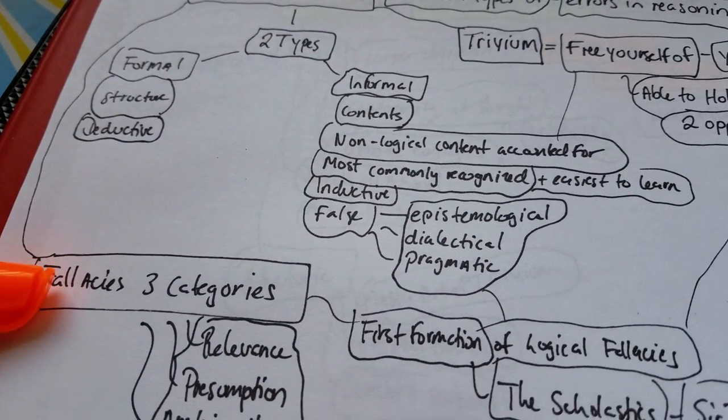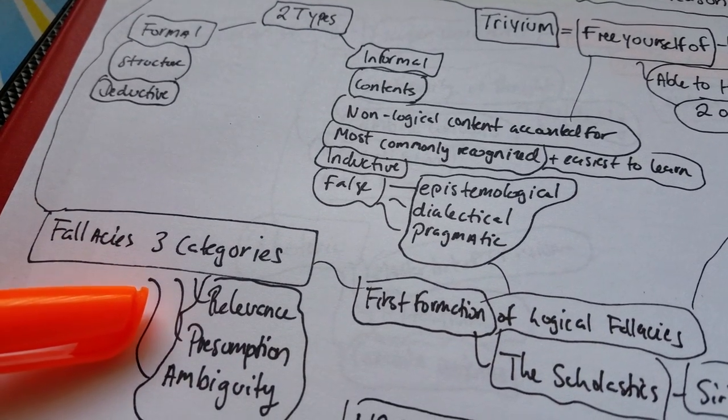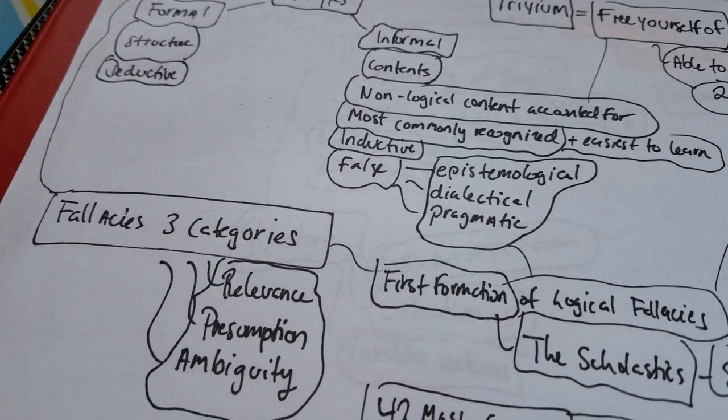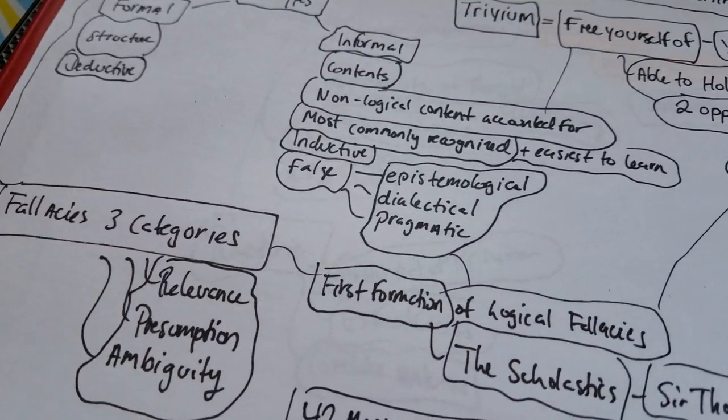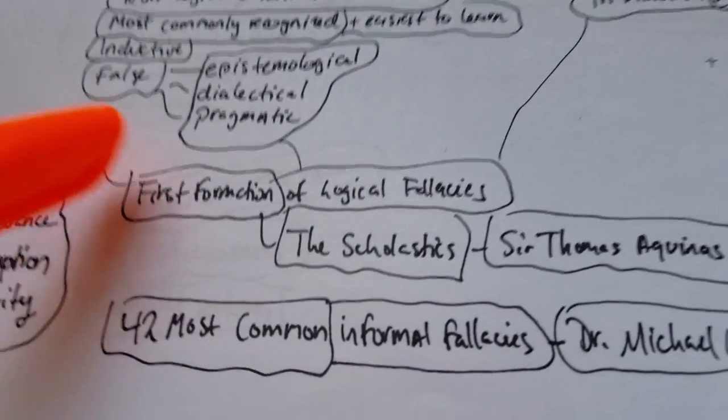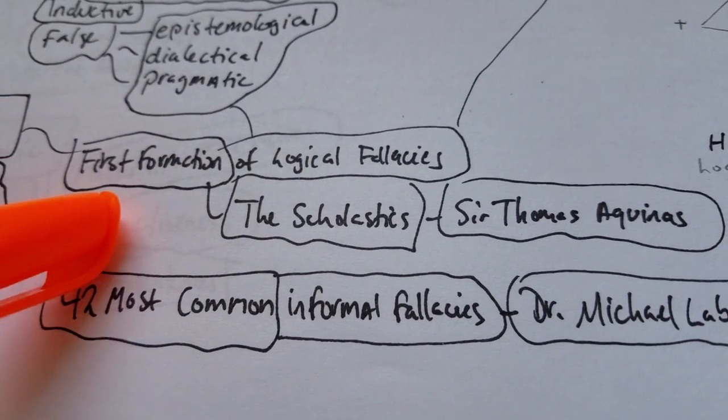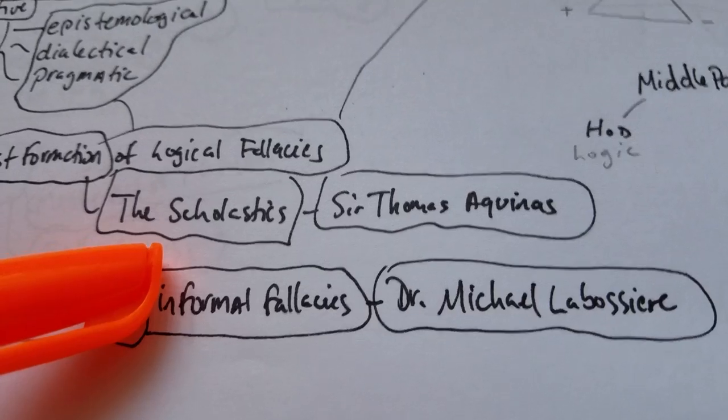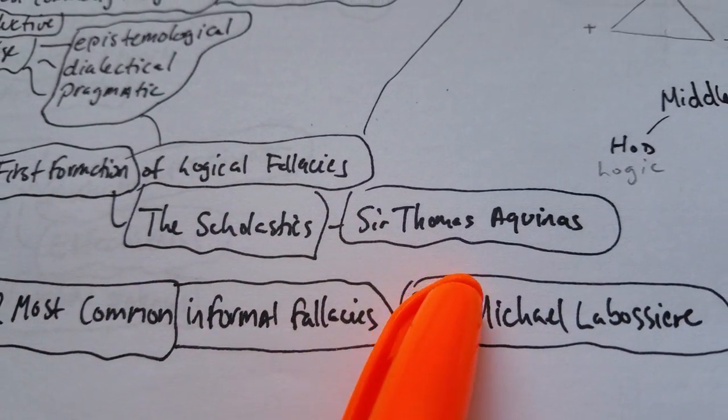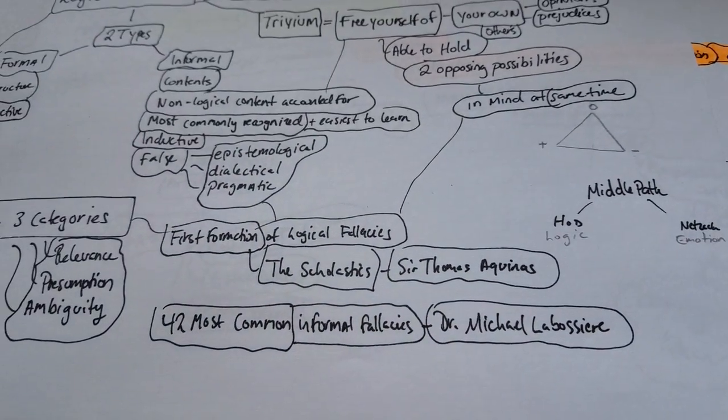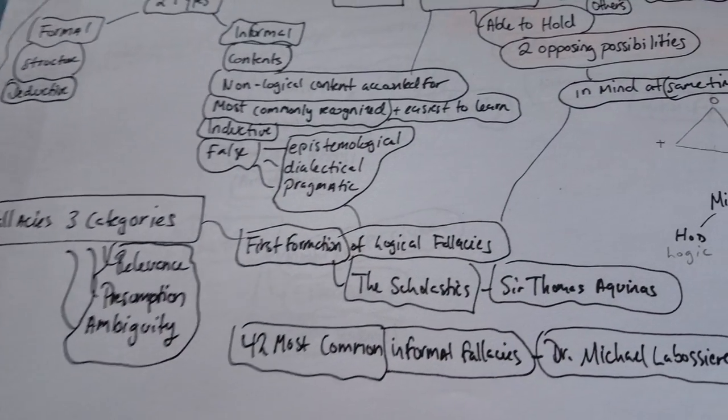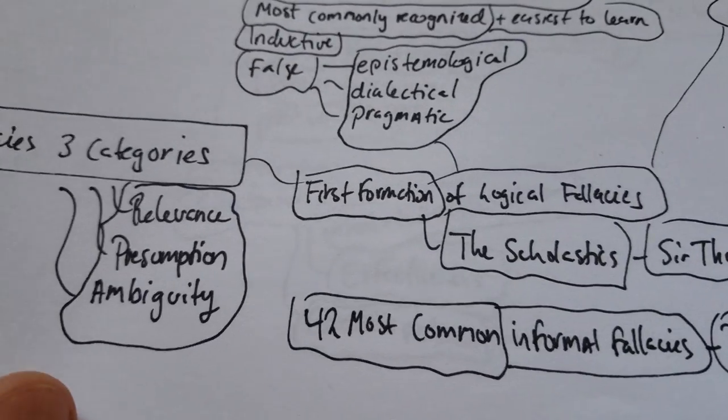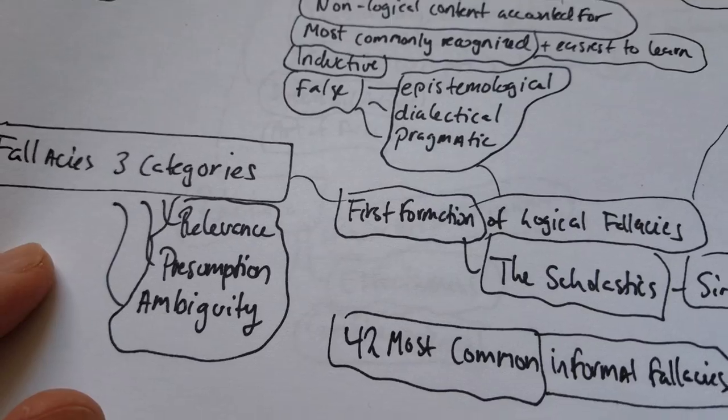And out of the two types of logical fallacies, you also have various categories. And the three major categories that you're going to be dealing with when you're looking at fallacies is relevance, presumption, and ambiguity. And we'll get into that in another video a little bit. But going further here, the first formation of logical fallacies, you can look up Sir Thomas Aquinas. I hope I'm saying that right, or Aquinas. Somebody can correct me. Thank you. I'm a beginner, as you can see. And I know this doesn't look like it's a beginner, but I call myself a beginner. I've been trying to work with the Trivium for some years. And it's taken me. I still don't get a lot of it.